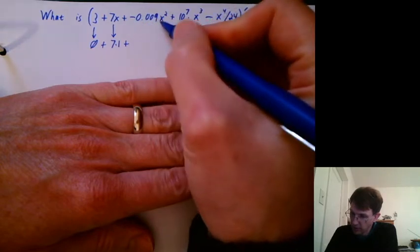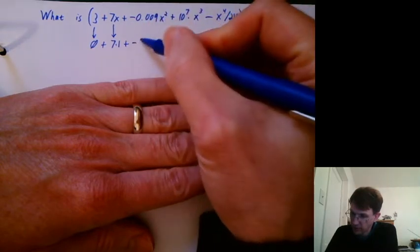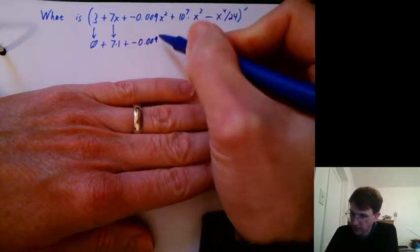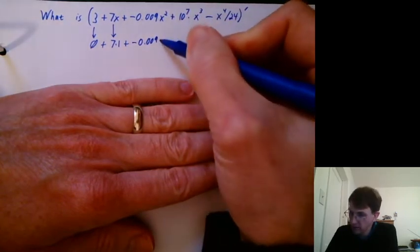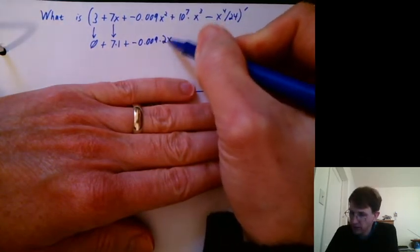Here we have another multiplying constant, so I can just copy that. And what's the derivative of x squared? With the constant power rule, it's 2x.